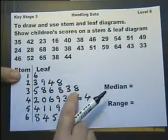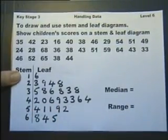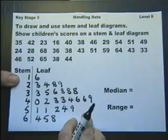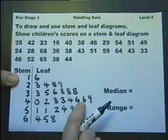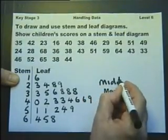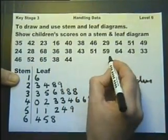And to actually make it more useful, we rewrite it yet again with these numbers in order. So once we've done our stem and leaf diagram, with the numbers in order, we can use it to find the median, which we know is the middle value.